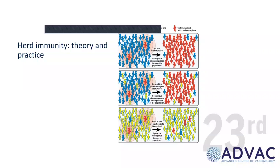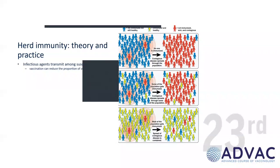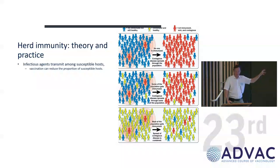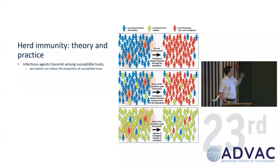I like this particular slide produced by the NIH. Synthesizing things you've heard already, we know that infectious agents transmit among susceptible hosts and may or may not cause disease. This slide says 'immunized or diseased,' but actually the red ones could just be infected and not diseased — you wouldn't necessarily know about that. We also know the concept of R0.